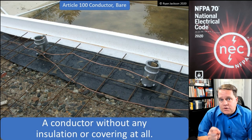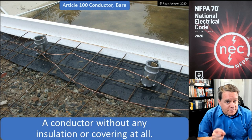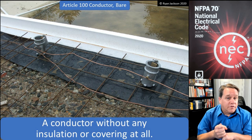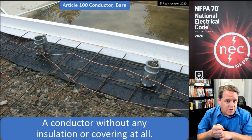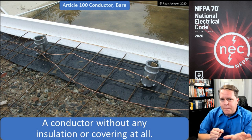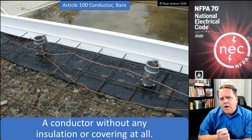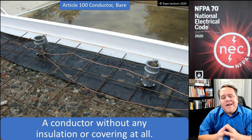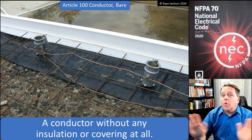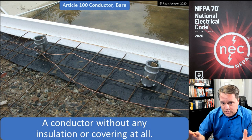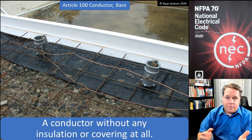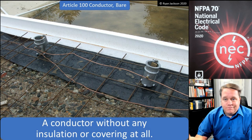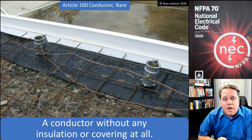Here we have the definitions of the different types of conductors: bare conductors, covered conductors, and insulated conductors. Let's start with bare, which is the simplest type. A bare conductor is a conductor without any insulation or covering whatsoever — bare copper or bare aluminum, just like its name would imply.